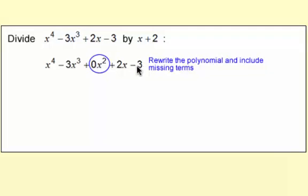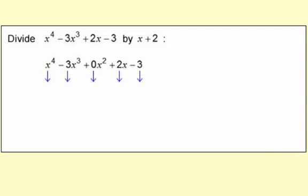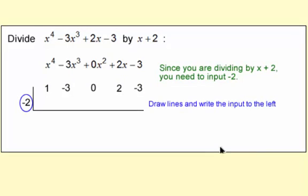The first thing you do is you rewrite with any missing terms included, so just 0x squared. Then you bring down the coefficients again. And then you write your negative 2. Since you're dividing by x plus 2, you need to input negative 2 over here.